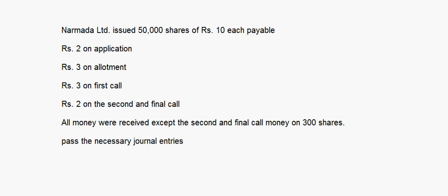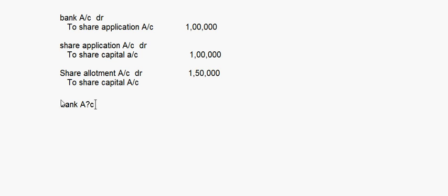The next entry is share allotment account debit, to share capital account. The allotment money is rupees 3, so 50,000 into 3 is 1 lakh 50,000. Then for receipt of allotment money: bank account debit, to share allotment account — again 1 lakh 50,000.